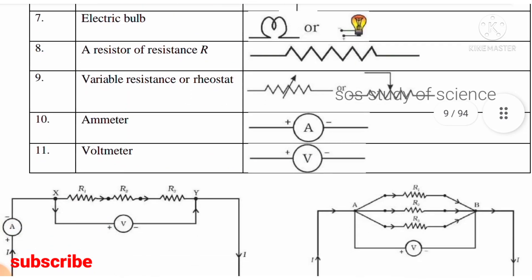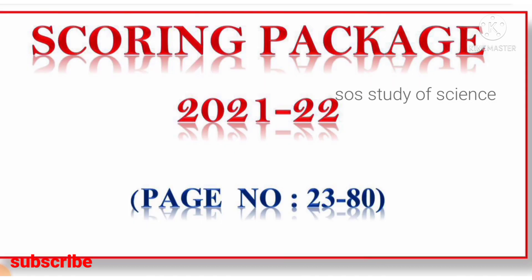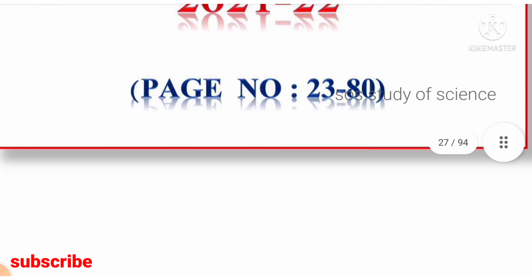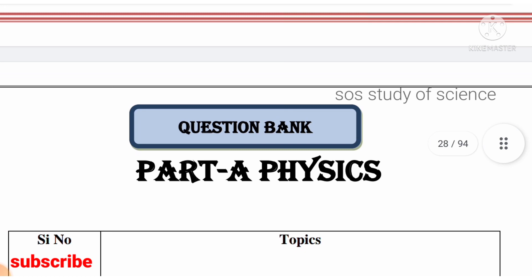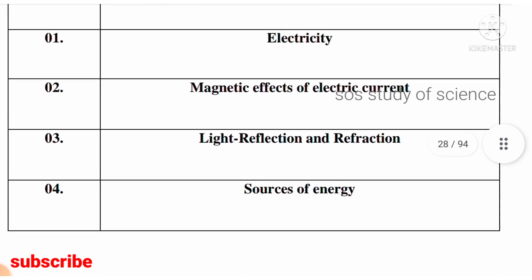From page number 23 onwards, it also includes the content which is needed to score better marks. Here they have divided the scoring packages as physics, chemistry, and biology.